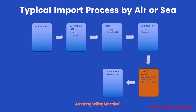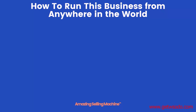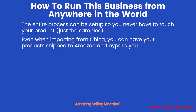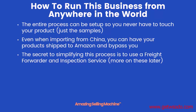Our recommendation is to follow this process for at least your first one or two imports. This entire business can be run from anywhere in the world — regardless of where you live and what Amazon marketplace you're selling on — and you can set it up so that you never have to touch your products other than the samples. Even when importing from China, you can have your product shipped to Amazon and completely bypass yourself by using a freight forwarder and inspection service.